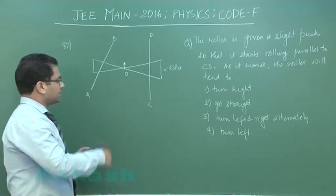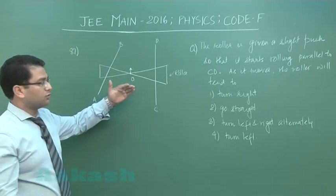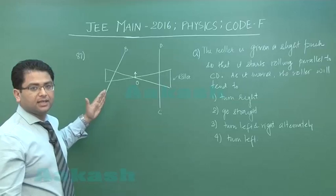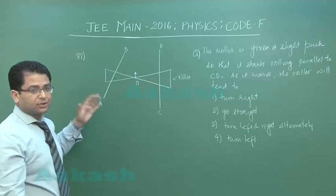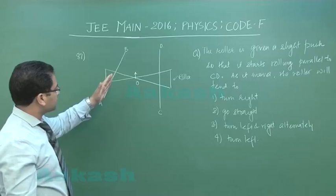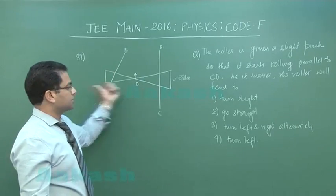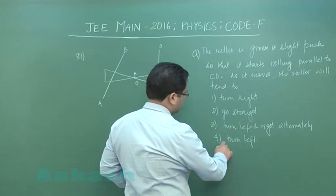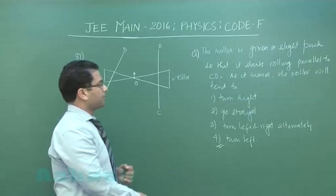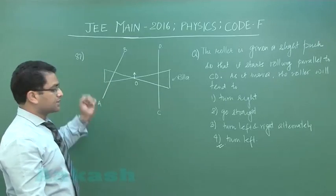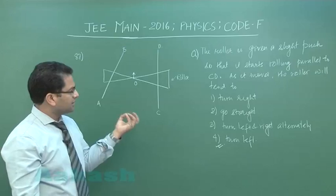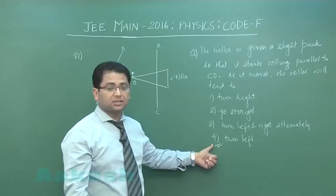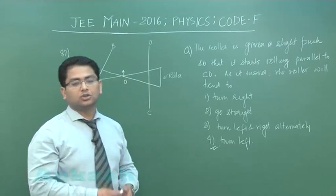You require a bit of imagination during this. Initially when it is rolling, if you try to find out the direction of friction at AB, the direction of friction would be backward. One component of the friction would be towards left, so the roller would have a tendency to turn towards left. That finishes question number 87. It seemed quite easy but it's a very thoughtful question, and the correct option is option number four. Now we'll go to question number 88.